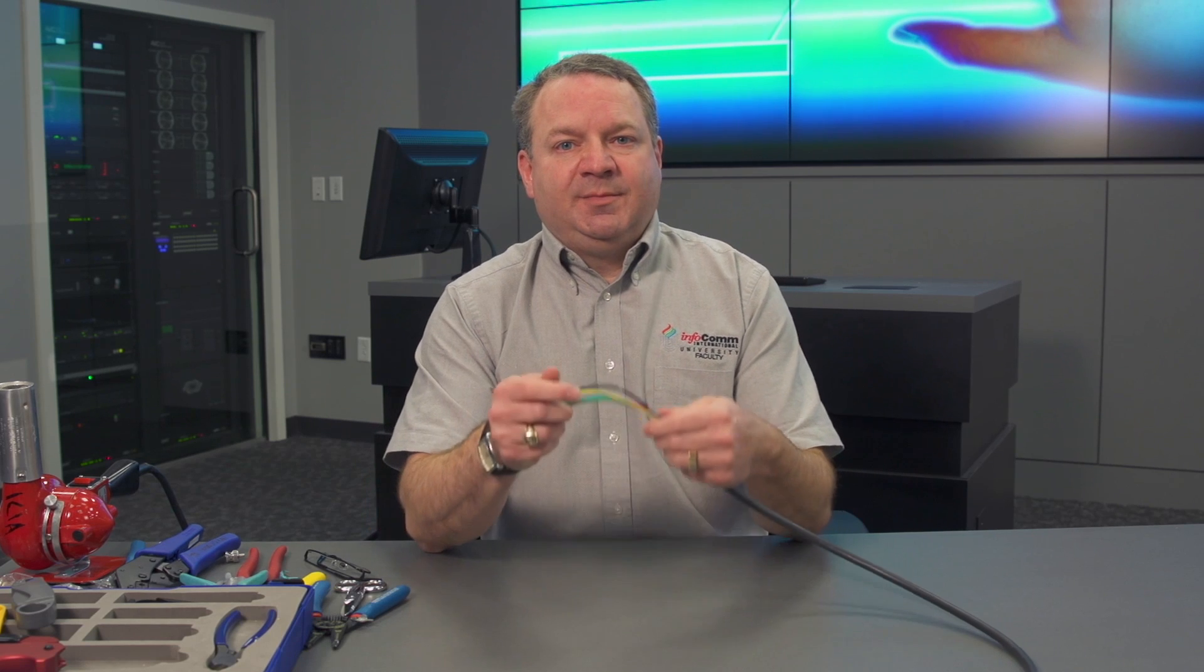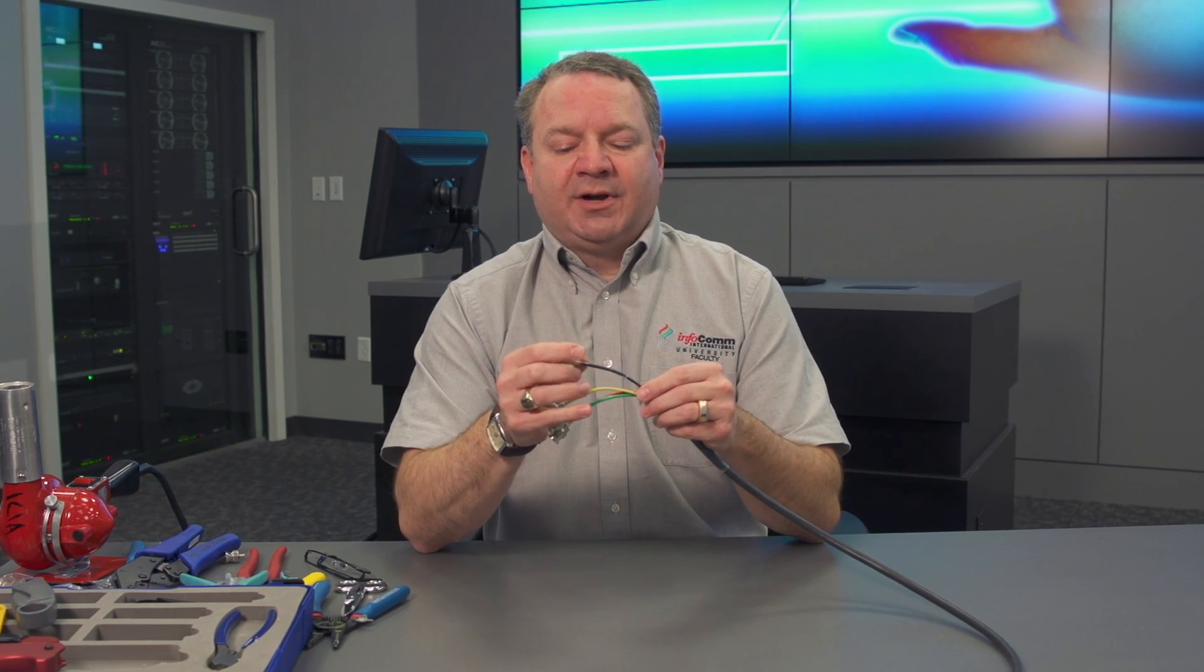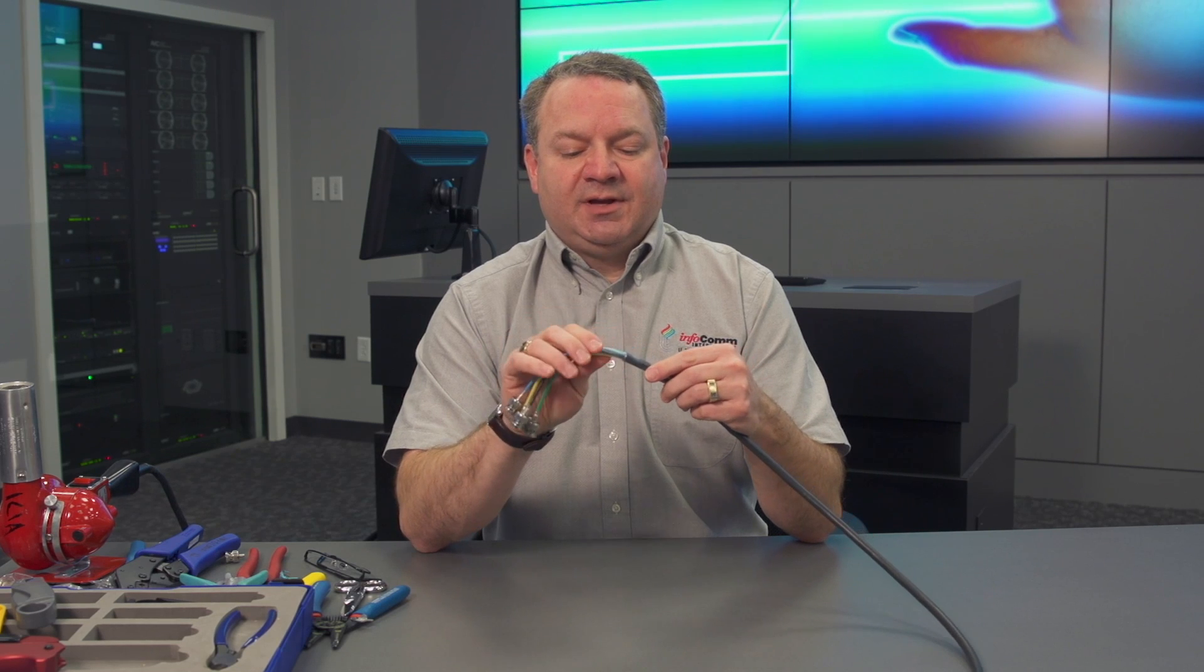Okay, so we've completed our RGBHV cables, our mini high-res B and C connections. We put on our heat shrink and our heat shrink here. All we have left to do is hook up the other end, and away we go.